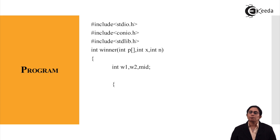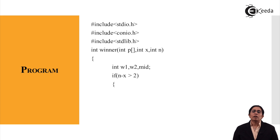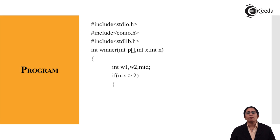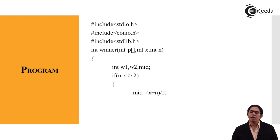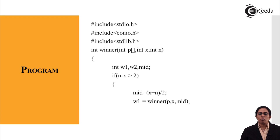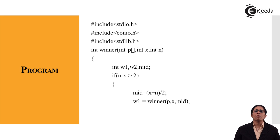If n minus x is greater than two, we continue in the loop — that means there are more than two players and we can find the winner. This function is implemented using the divide and conquer strategy. We find mid using: mid = x + n / 2 (first element plus last element divided by 2). Then w1 is set equal to winner(p, x, mid), so whatever the value of mid is, it is recursively passed to the winner function and the first winner is predicted.